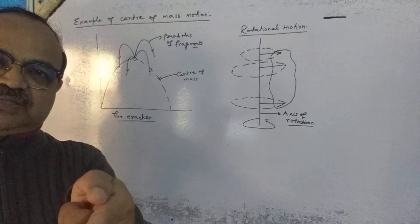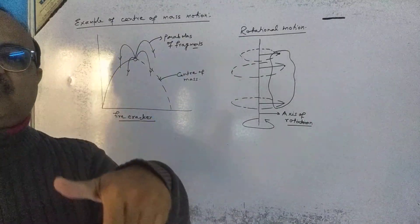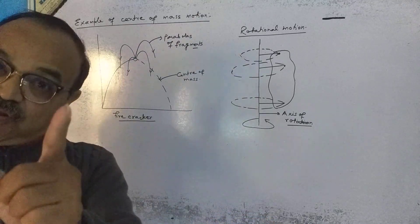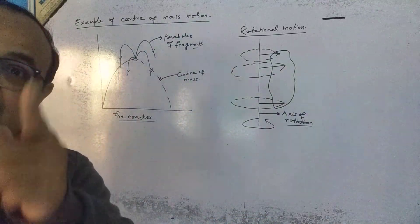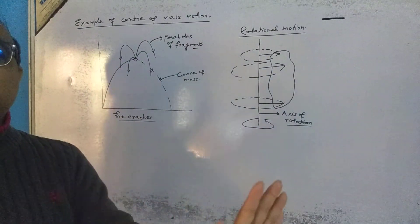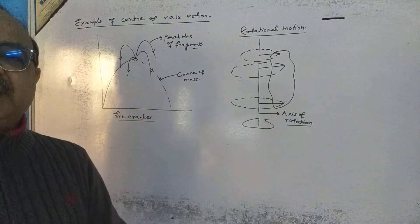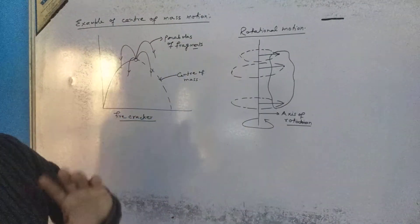The velocity of the center of mass of the system is remaining the same. It's a very good example of center of mass motion.